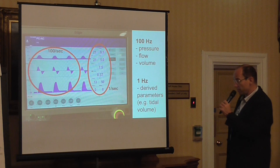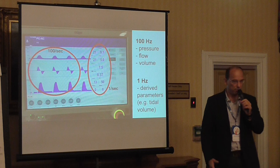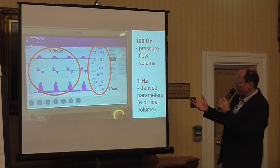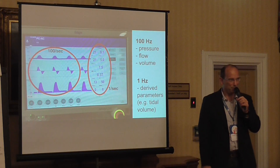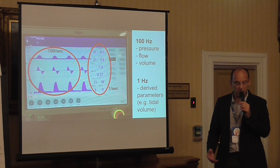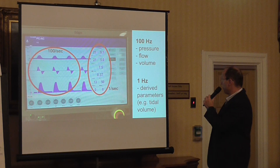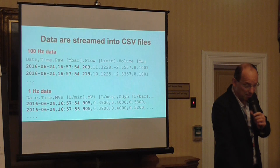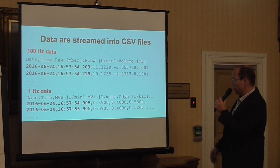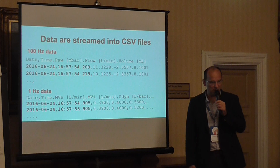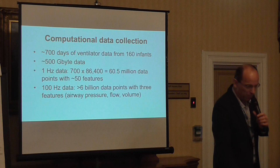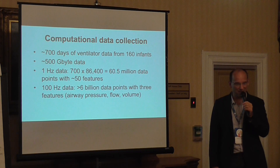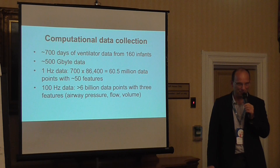About four years ago, I managed to get a cable which downloads data from the ventilators we use on our babies, and I started downloading data at high sampling rates. The highest sampling rate is 100 Hz, which allows me to rebuild the pressure, flow, and volume waveforms, and also capture ventilator parameters at 1 Hz. These data stream through a serial port as time series data with millisecond timestamps, written into CSV files. Over the last four years I've collected approximately 700 days' worth of ventilator data from over 100 infants — 500 gigabytes of data.